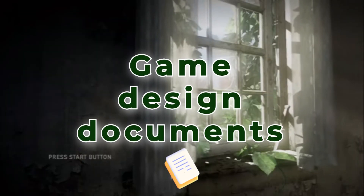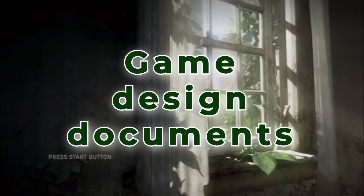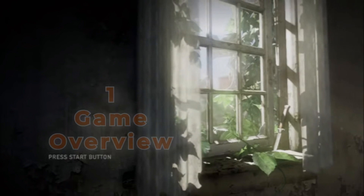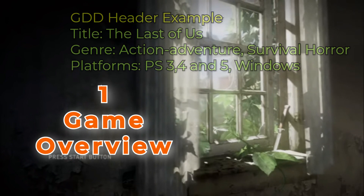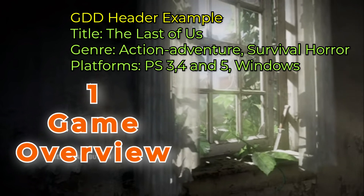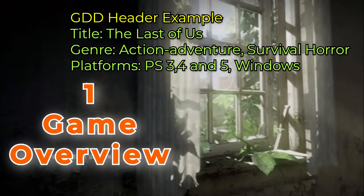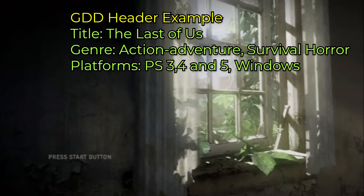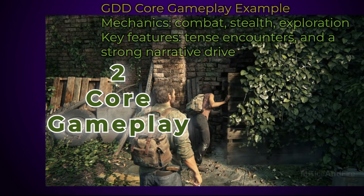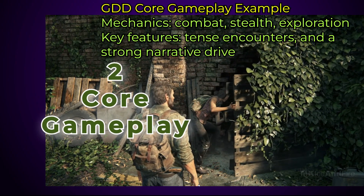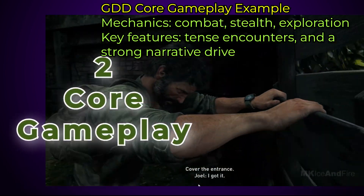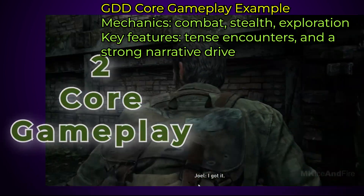Game design documents need to include a game overview with the title and game name, genre with type and targeted platform, core gameplay with mechanics, key features of the game mechanics, and controls with player interaction.